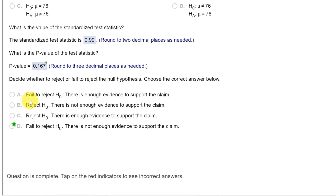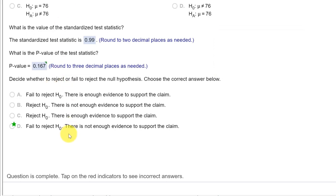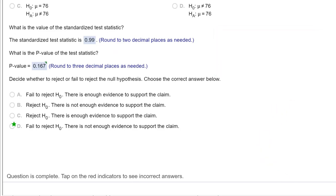And that is our final part. We fail to reject the null because the p-value is greater than alpha, 0.167 is greater than 0.05. And if the question asks, we also fail to reject because the standardized test statistic of 0.99 is not greater than the critical value of 1.71. So I hope this helps.